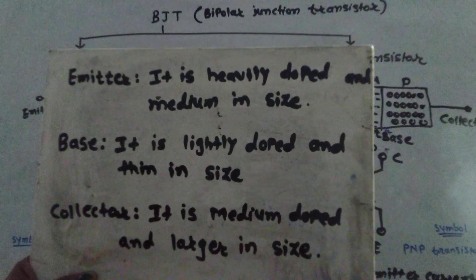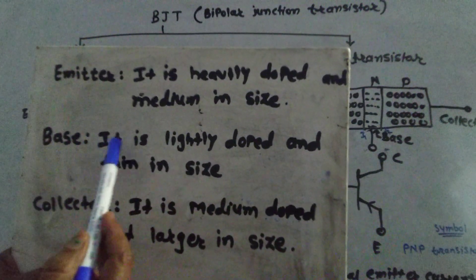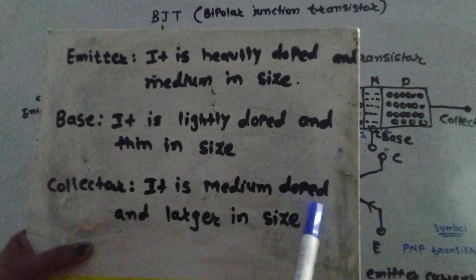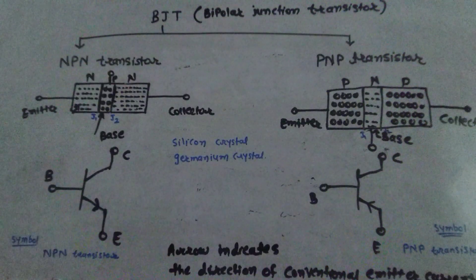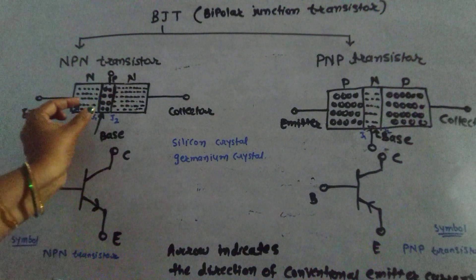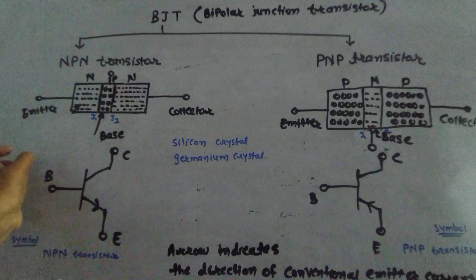Emitter is heavily doped and medium in size. Base is lightly doped and thin in size, and collector is medium doped and larger in size. Area-wise, collector is larger than the other two, where base is thin and emitter is medium size.